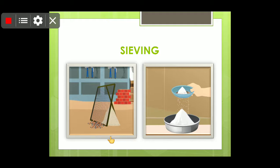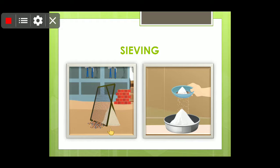At construction sites, a larger mesh of square shape is used, with bigger pores. It is used to separate bigger pebbles or stones from sand. So we can conclude that the size of the pores of the mesh depends upon the size of the impurity which has to be separated.